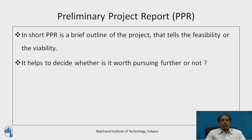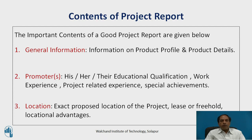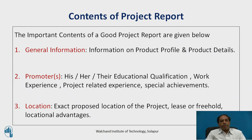The important contents of a good project report are as follows. The first is general information — information on the product profile and product details: what is the product you are trying to manufacture, what are its technical specifications, how it compares with competitors, whether it has competition or is a monopoly, new technology entering the market, and so on.